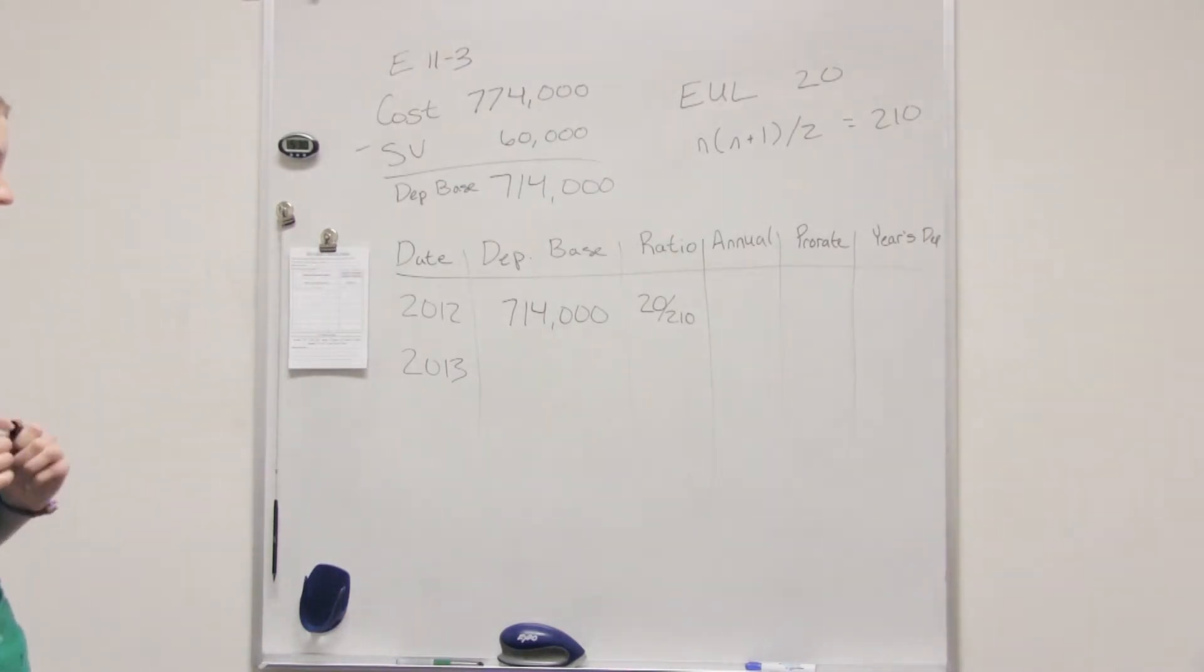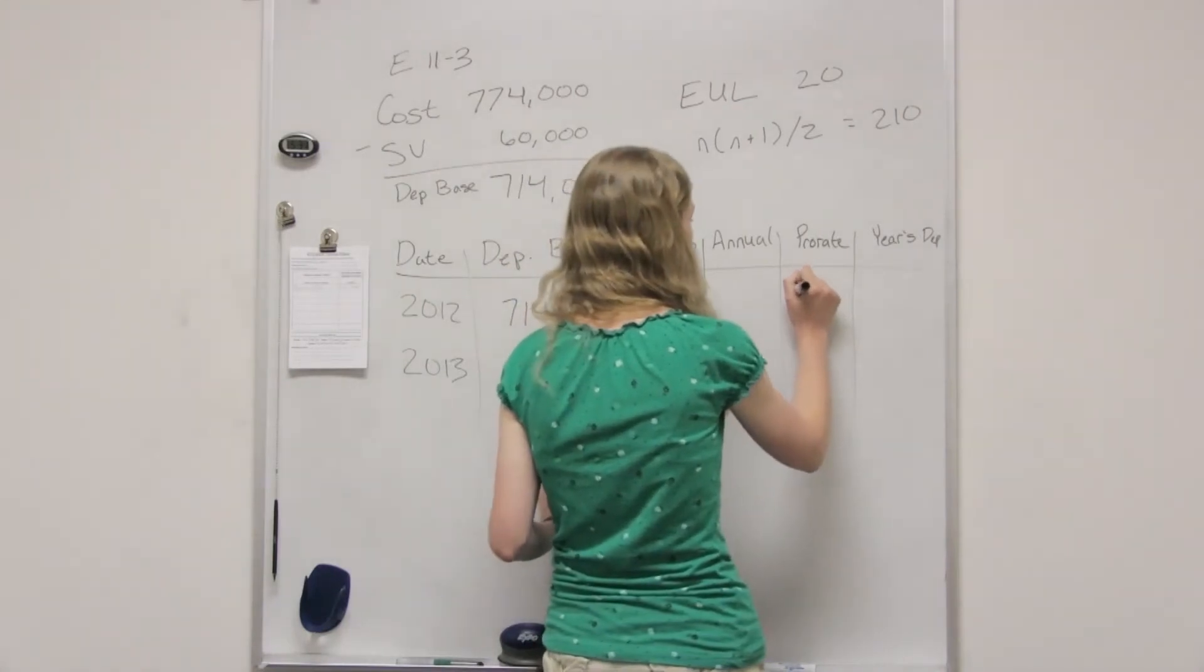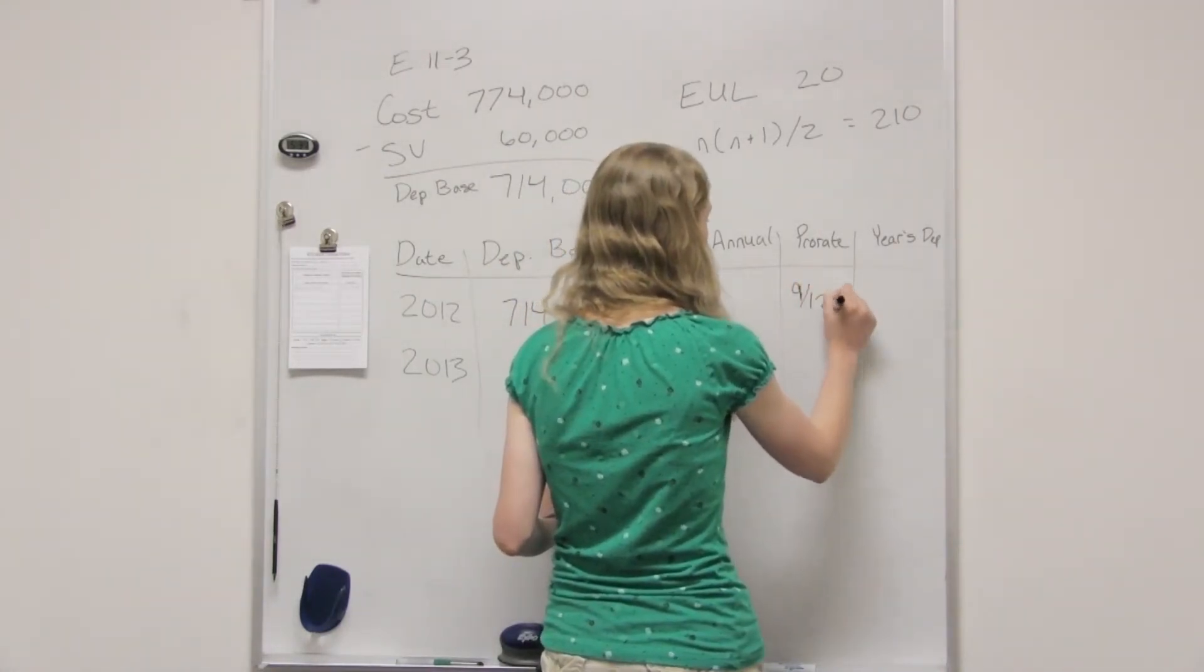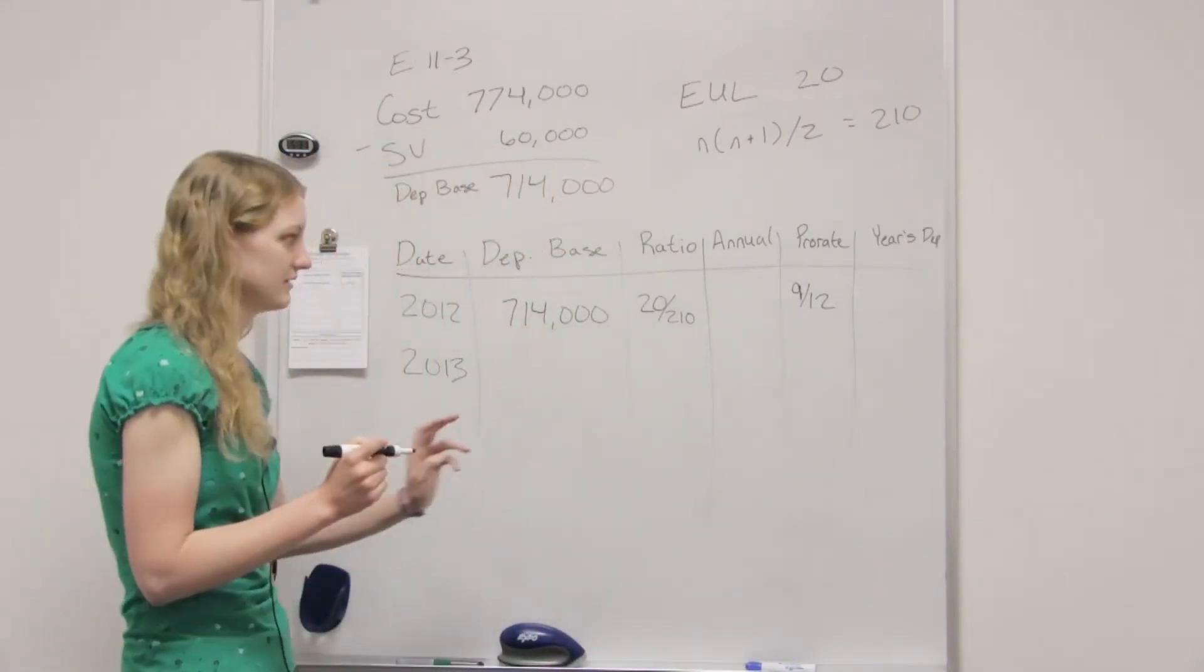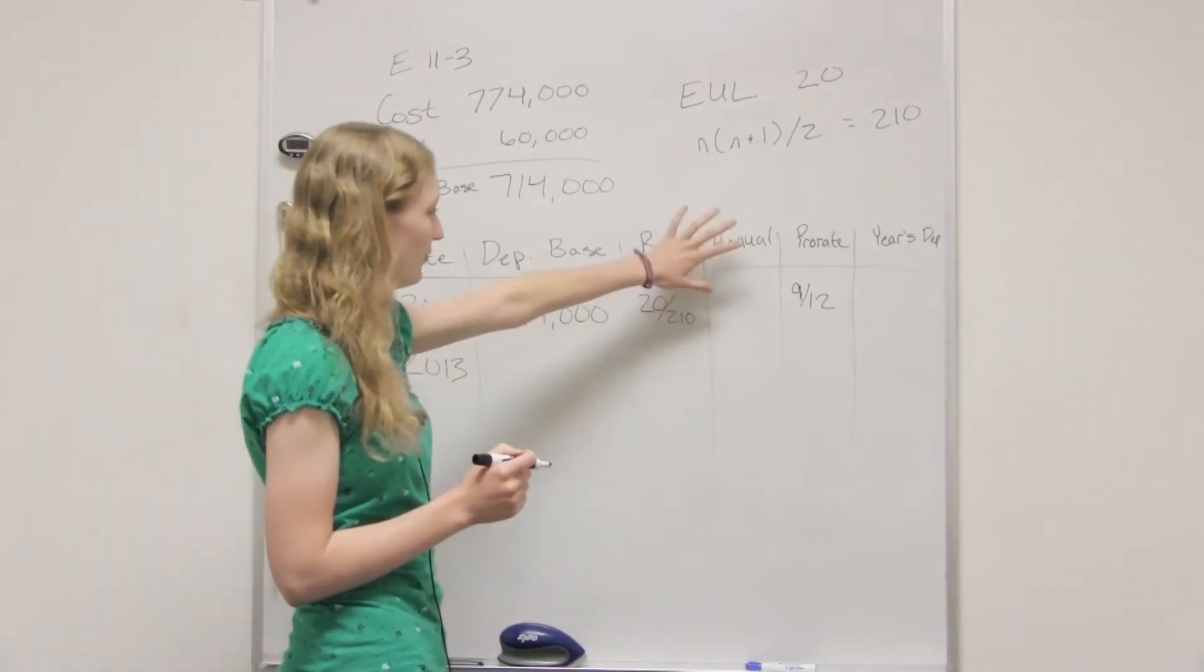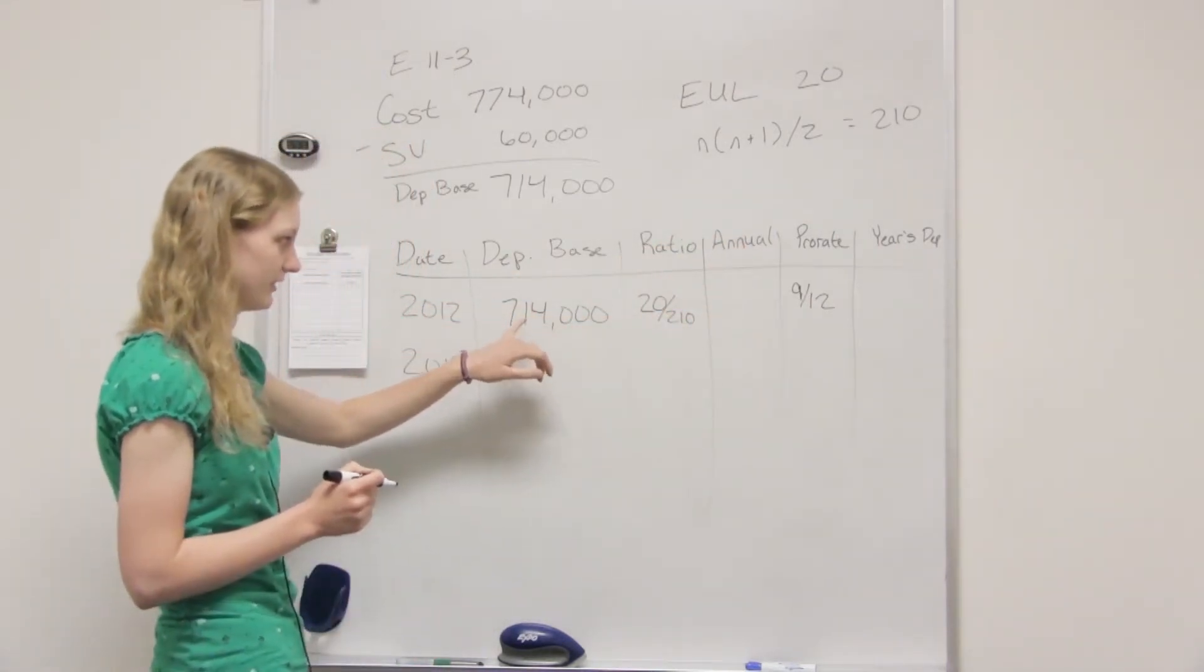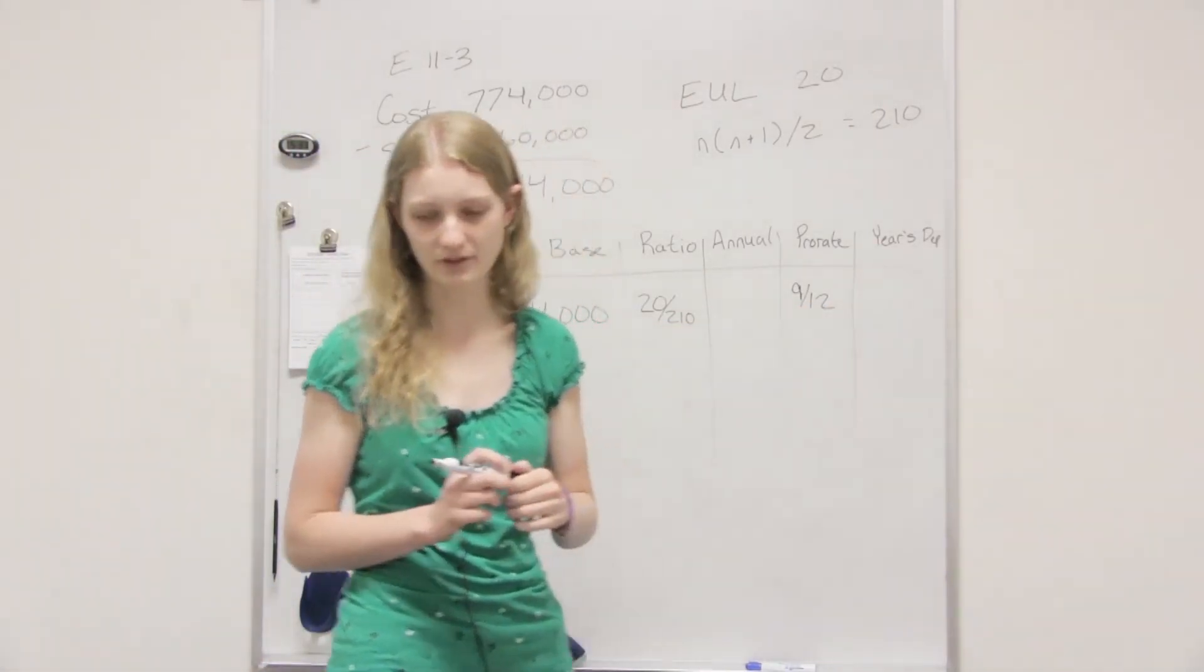So this would be from April, so we have to figure out the prorate from April. April 1st, so it's going to be 9 over 12. Yeah. So it would be 9 divided by 12, or like 75%. Yeah, 75%. Perfect. And so what you can either do in this case is find this annual amortization or depreciation, or you can just ignore that column and just multiply the 714 times your ratio times your prorate to get your year's depreciation. It'll be the same either way.